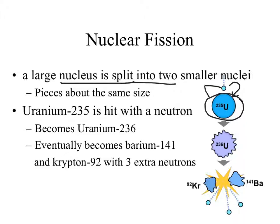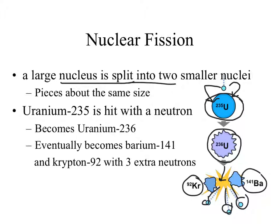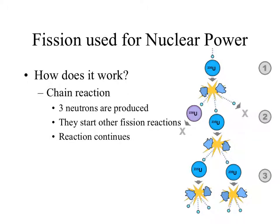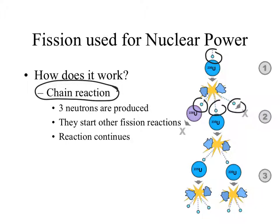Once uranium-235 gets hit with a neutron, it absorbs that neutron and becomes uranium-236. That is very unstable, and it splits apart into two nuclei — krypton-92 and barium-141. Just as important, it gives off three neutrons. So you started with one neutron and ended with three. That's where the importance comes in for fission and how you can produce a lot of energy. You can start what's called a chain reaction. Because if a neutron hits uranium-238, nothing happens — it's not fissile material.